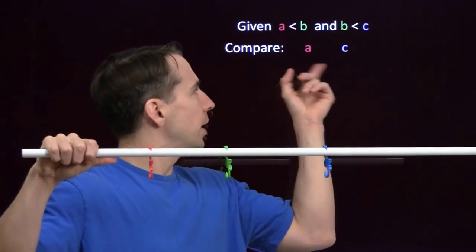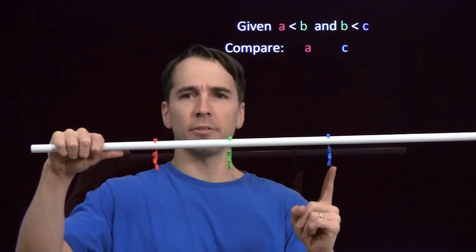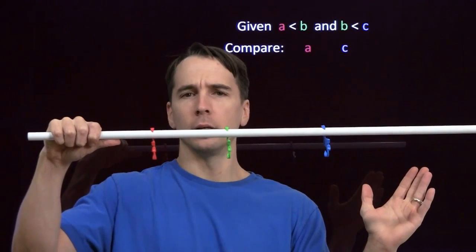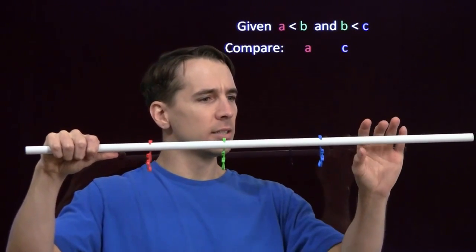And now I want to compare a and c. Well, a has to be to the left of b. b has to be to the left of c. So they always have to end up in this order on the number line. So a has to be less than c.